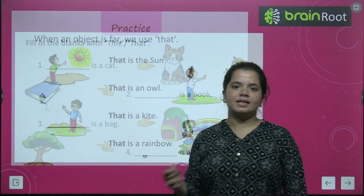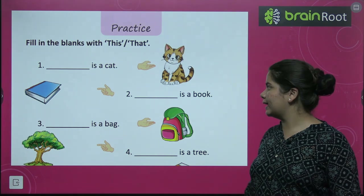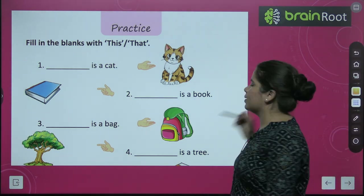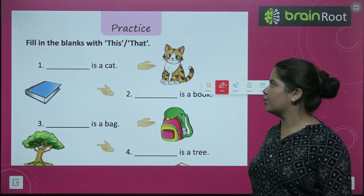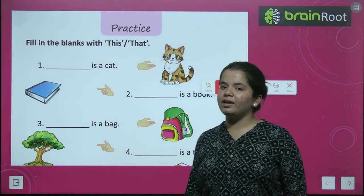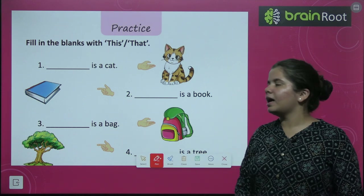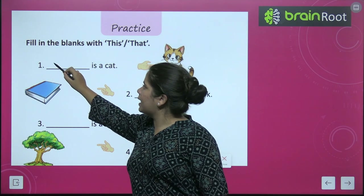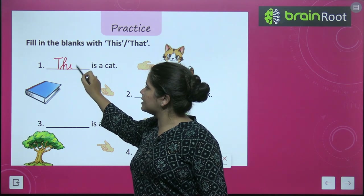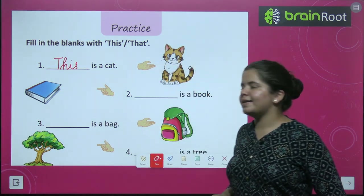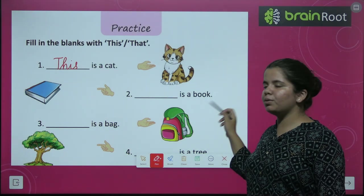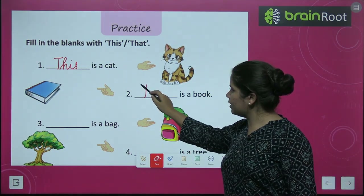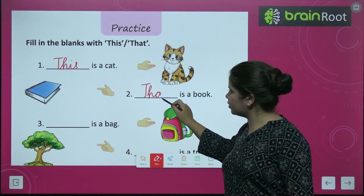तो आप देख सकते हैं, जो चीज़ें हमसे दूर होती हैं उसके लिए हम 'that' use करते हैं, और जो हमसे पास होती हैं उनके लिए 'this' use करते हैं. अब देखें: dash is a cat — यह हमसे पास है, तो हम लिखेंगे 'this is a cat'. Next, dash is a book — यह hand से दूर है, तो 'that is a book'.